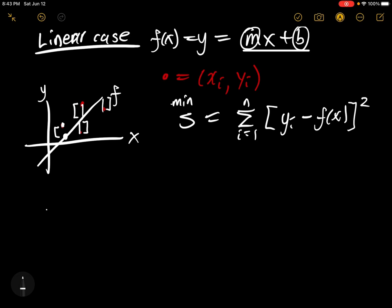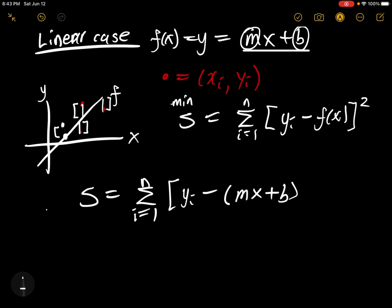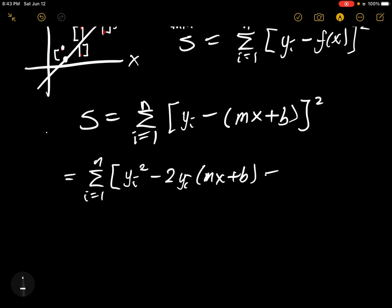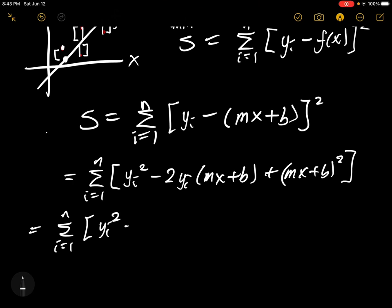Let's derive what s is. We plug in the linear case, so it's the summation of (y_i minus (mx + b)) squared. Simplifying, we get the summation of: y_i squared minus 2y_i(mx + b) plus (mx + b) squared. Expanding further: y_i squared minus 2m·y_i·x minus 2b·y_i plus m²x² plus 2mbx plus b squared. We're summing all of this.